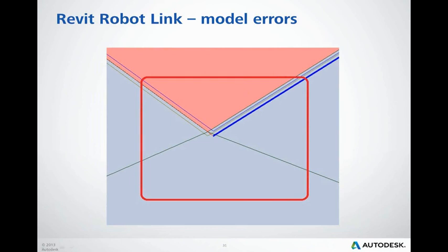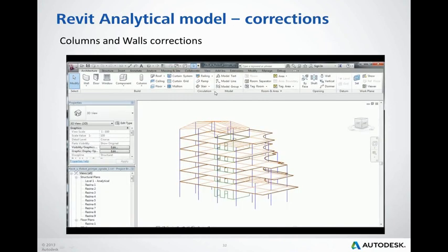Overlapping analytical slab edges are visible in Robot. For a Robot user it is quite easy to correct the model — sometimes it is time-consuming, but there are many tools in Robot to do so. Here we will look at a few examples of how to correct the Revit analytical model.